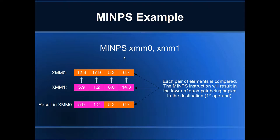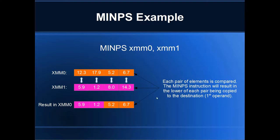So what do they actually do? Here's an illustration. If the CPU reads the instruction MinPS XMM0, XMM1, imagining that some numbers are in XMM0 and some in XMM1, the CPU is going to compare each pair. So it's going to compare 12.3 to 5.9, and because it's MinPS — Minimum of Packed Singles — it's going to record the smallest of the two, which is 5.9, back into the first operand, which is also the destination. Each pair of singles gets compared and you end up with the minimum of each pair in the result.